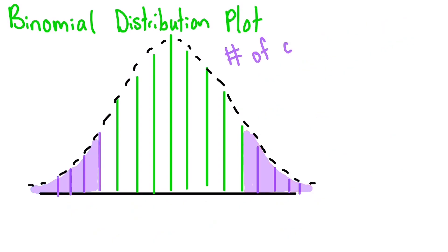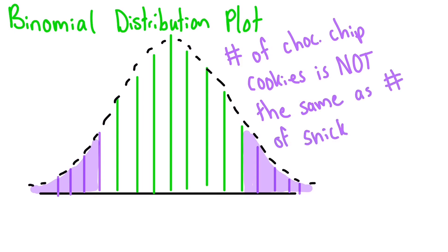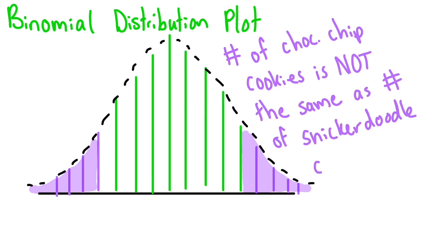If we don't know whether the true number is smaller or larger, but just suspect that it's different, we can actually split the critical region like this. This is called a two-tailed test, and it means that we could either draw a number of chocolate chip cookies that's way higher or way lower than expected to prove our point.